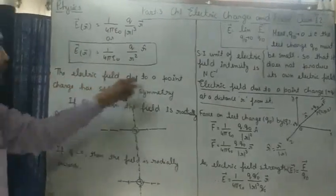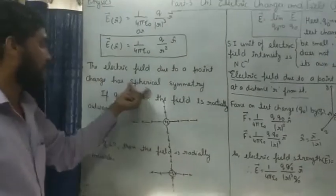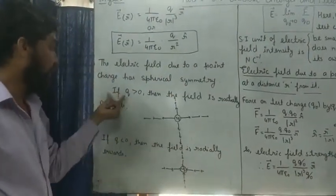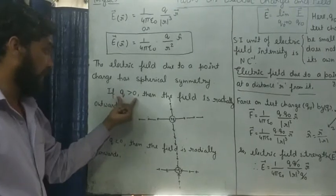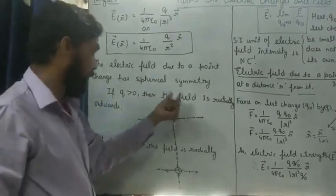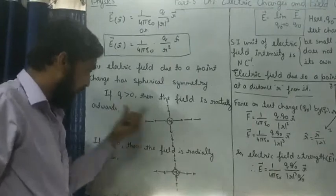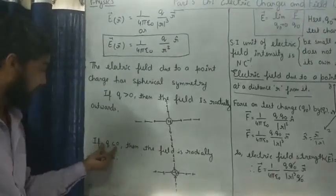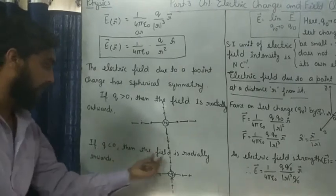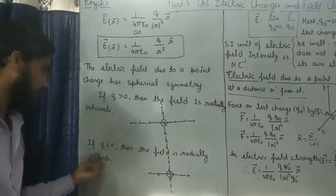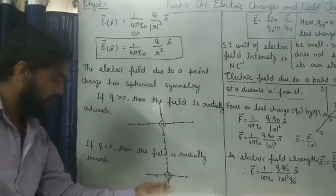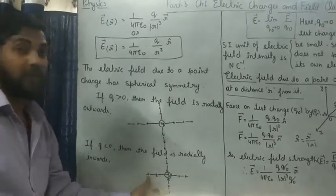The electric field due to a point charge has spherical symmetry. If Q > 0, the field is radially outward. If Q < 0, the field is radially inward, as shown in the figures.